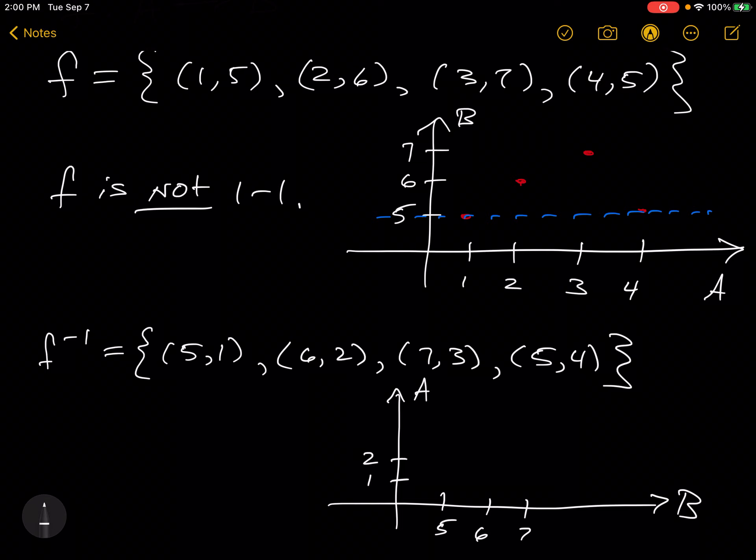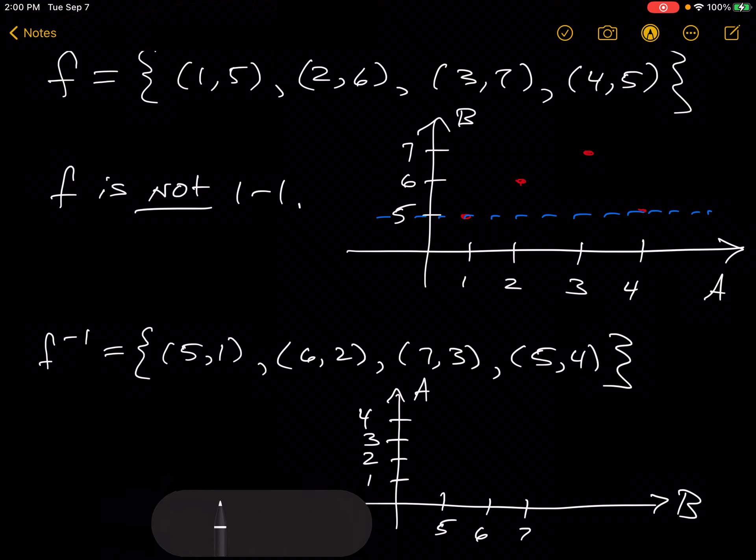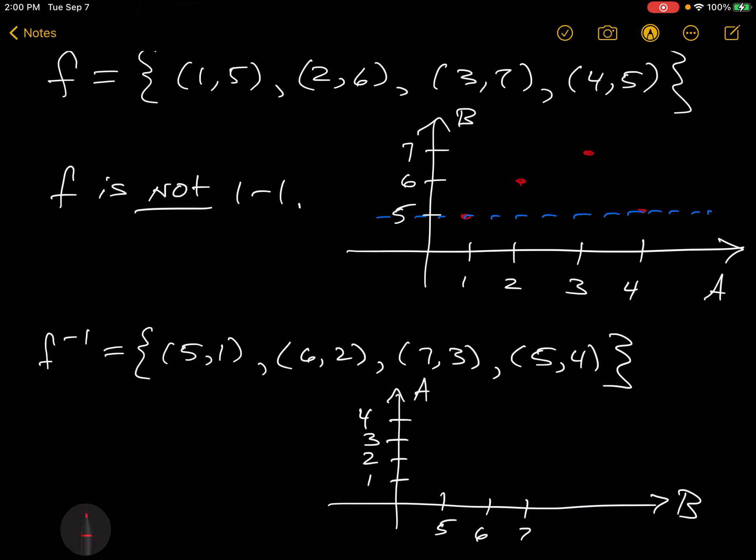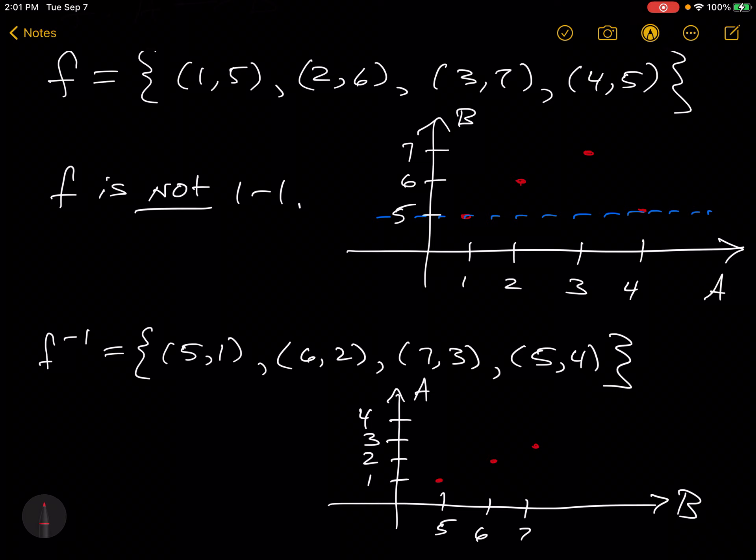1, 2, 3, and 4. We have 5 going to 1, 6 going to 2, 7 going to 3, and 5 going to 4.